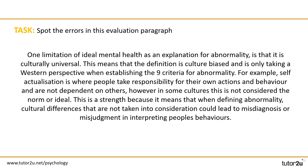Hopefully you managed to spot a couple of errors in the paragraph. First up, where it says 'an explanation for abnormality', that's inaccurate because we're talking about a definition of abnormality, not an explanation. Where it suggests it's culturally universal, we know from previous lessons that it's not universal — the term the candidate should have used is culture bias. Nine criteria isn't correct; we know there are six criteria. Self-actualisation is one of the criteria, but it's not the one that is then described. And this wasn't a strength. You can see how a few wrong terms or slips of the pen can really derail what otherwise could have been a really good evaluation point.